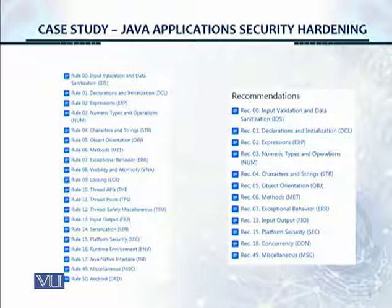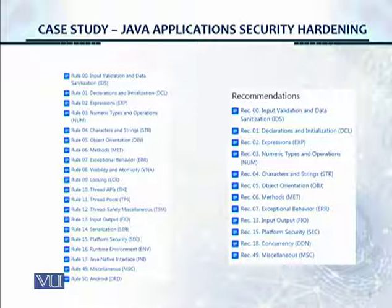Some of the rules for Java are: Rule 0 - input validation and data sanitation, starting from the top; Rule 1 - declarations and initialization; Rule 2 - expressions. And then it shows you the entire set of rules and recommendations on the right side.